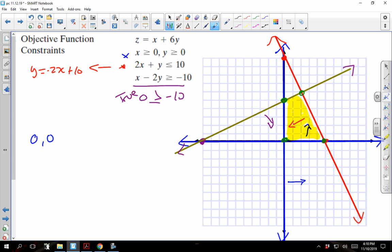We've got 0, 0. We've got 0, 5. We've got 2, 6. We've got 5, 0. And if I plug those into my objective function, x plus 6y equals z, we can then find out what our maximized point would be for this objective function.